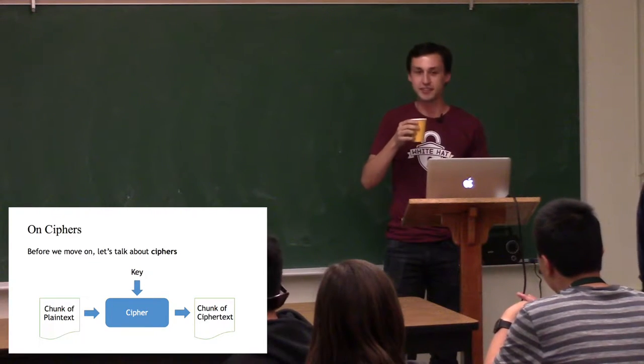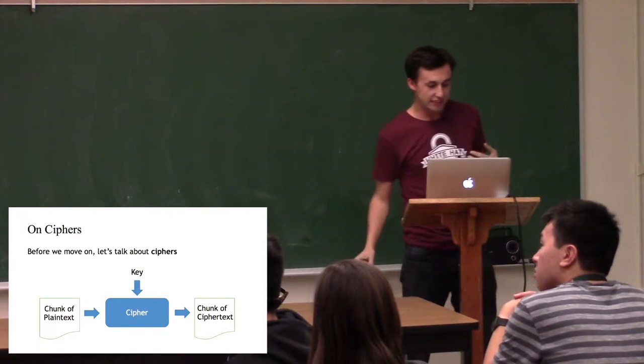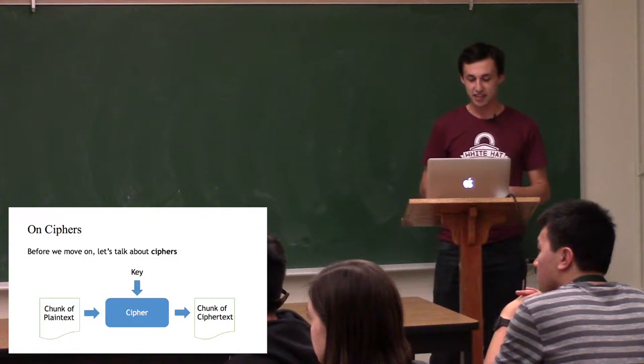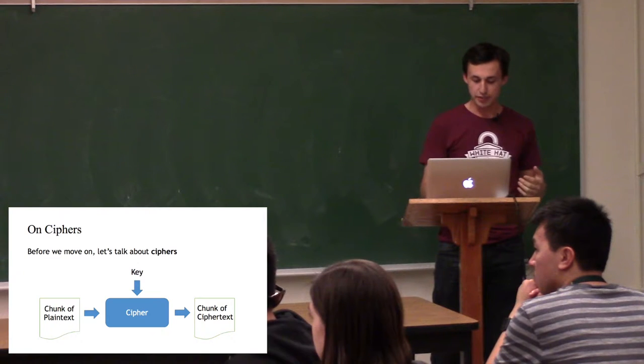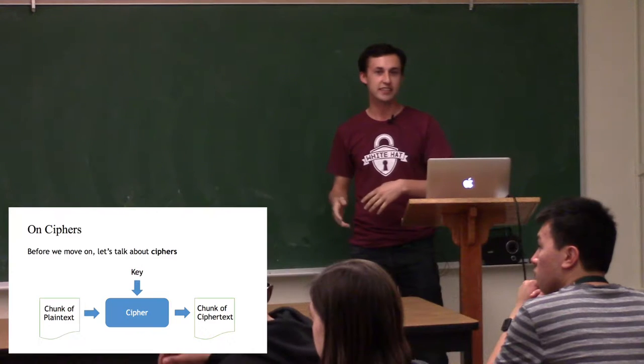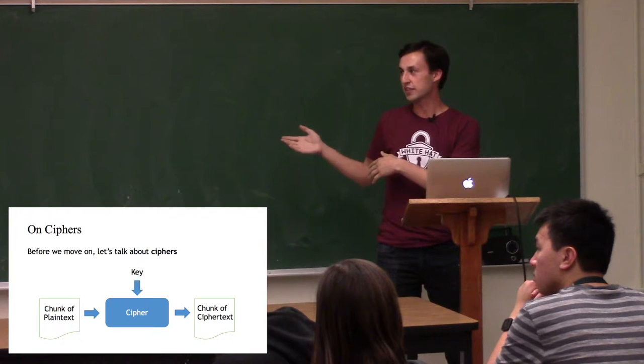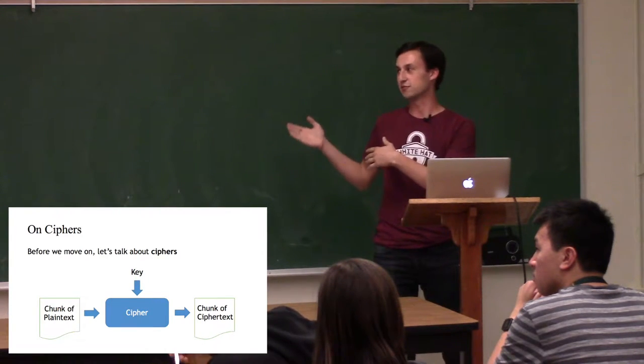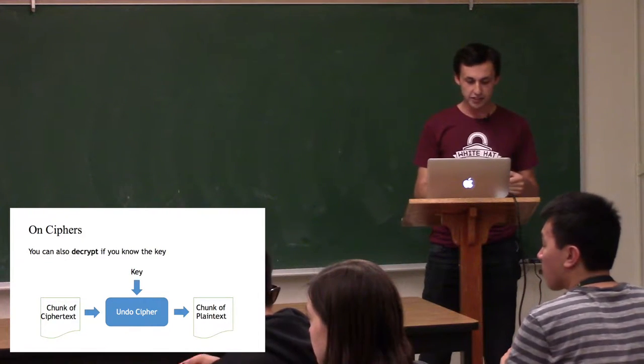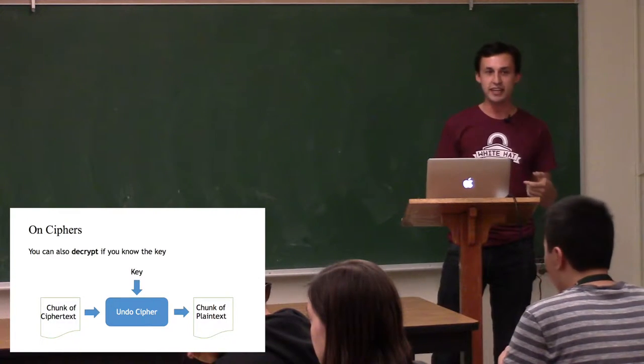So before we get into the next side channel attack, I just want to talk a bit about ciphers first. A cipher is an algorithm that allows you to perform encryption. So when you plug in a message, a chunk of plain text, and then plug in a key, what you get out is a bit of ciphertext. And you can send the ciphertext in the clear, send it somewhere else. Basically, the ciphertext allows you to transmit a message to someone else without that person realizing what was in the plaintext. And that's because in order to get the message back, you have to know what the key is.